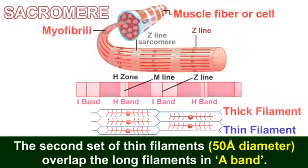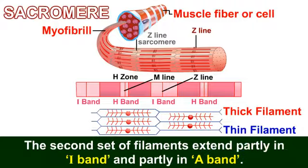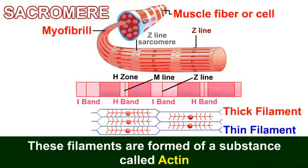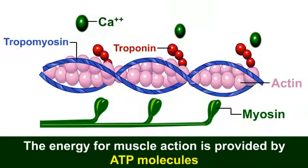The second set of thin filaments, 50 angstrom in diameter, overlaps the long filaments in the A band. These filaments extend partly in the I band and partly in the A band, and are formed of a substance called actin. The energy for muscle action is provided by adenosine triphosphate molecules.